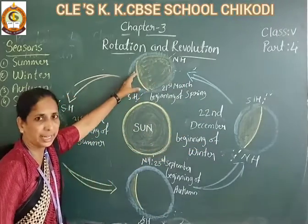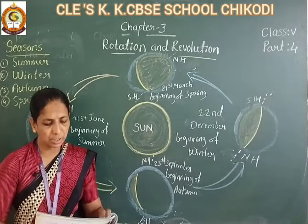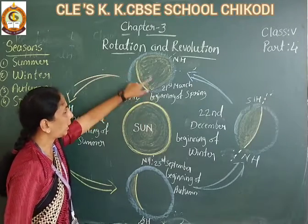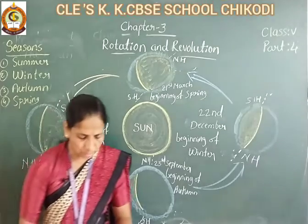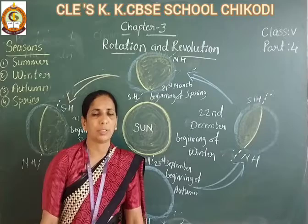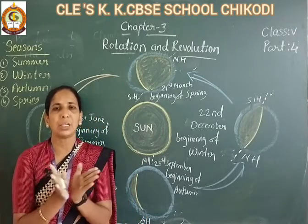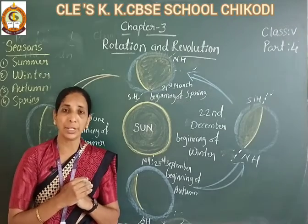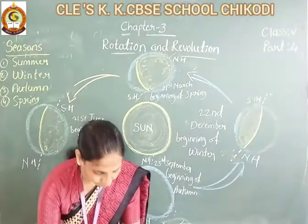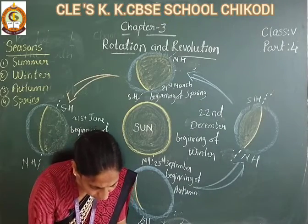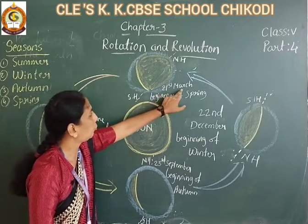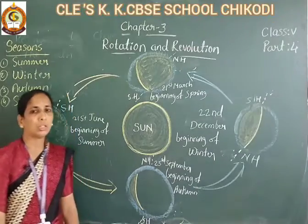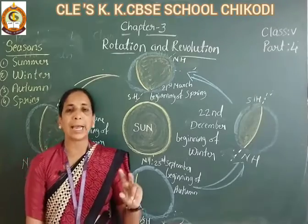Revolution of the earth: the sun shines directly twice over the equator. This happens during the equinox. When the sun shines towards the equator, equal days and equal nights occur. Equinoxes occur on 21st March and 23rd September.